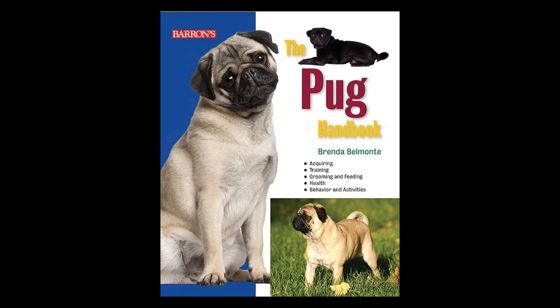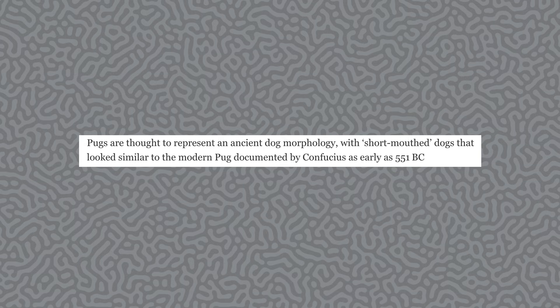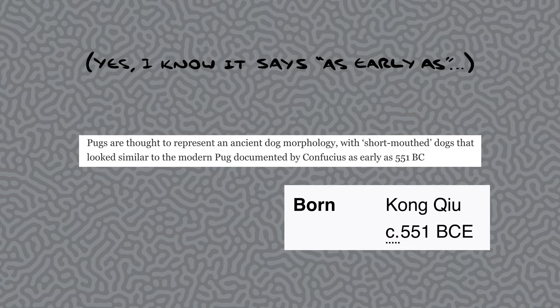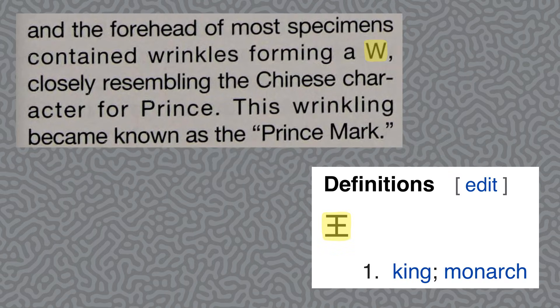...they all cite a guidebook on keeping pugs which, of course, has no bibliography. They also say that Confucius was writing about short-nosed dogs the very year that he was born, which, along with several other inconsistencies, leads me to believe that this is a myth.